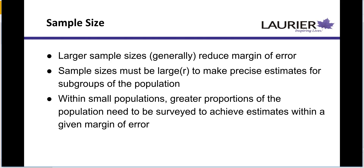Those are guidelines — some general rules to think about, and there are exceptions and context you'll want to weigh. But generally, a larger sample size will mean more accuracy and will reduce the margin of error. So if you're surveying 500 versus surveying 1,700, you want to go with the 1,700 sample because that's going to give you a lower margin of error and a better ability to make generalizations about the population. Generally, the larger it is, the better able you are to make more precise estimates.